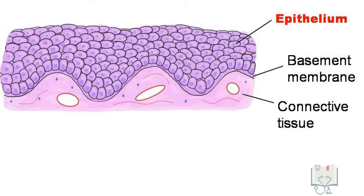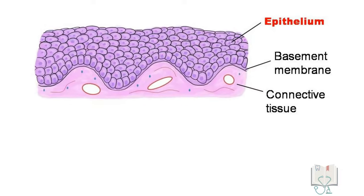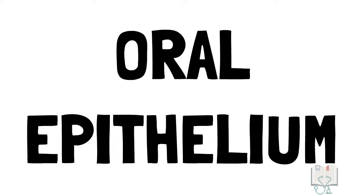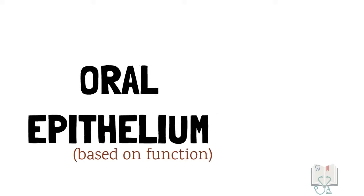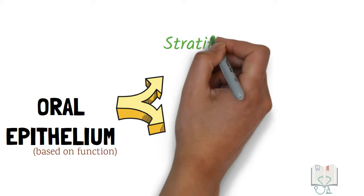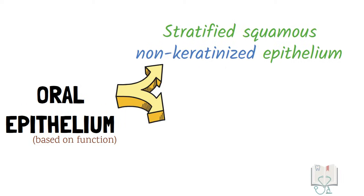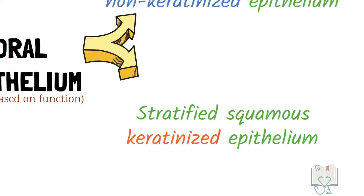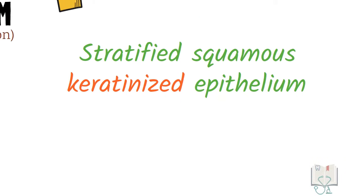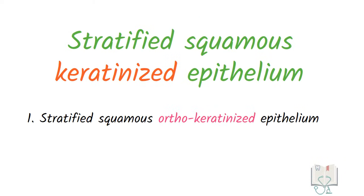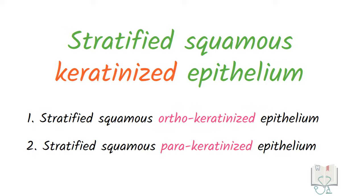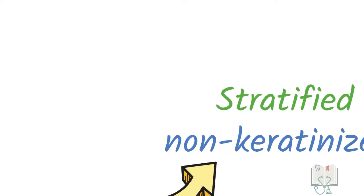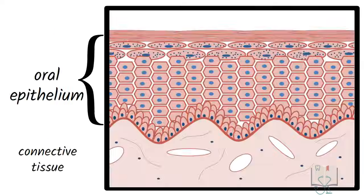Oral epithelium forms the primary barrier between the oral environment and deeper tissues. Oral epithelium is of two types depending on the functional requirement: stratified squamous non-keratinized epithelium and stratified squamous keratinized epithelium. The keratinized epithelium can be further divided into orthokeratinized epithelium and parakeratinized epithelium. Here we will discuss the stratified squamous keratinized epithelium.